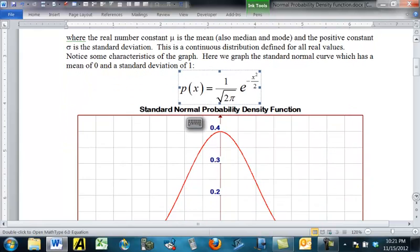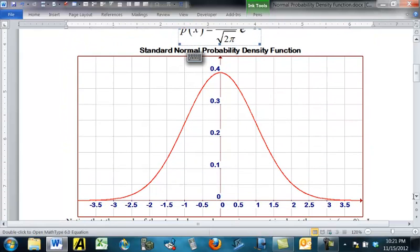And here's what the graph looks like. It has kind of a bell shape to it, so this is sometimes called a bell-shaped curve, or a standard normal probability density function. This is very important in the study of probability and statistics.